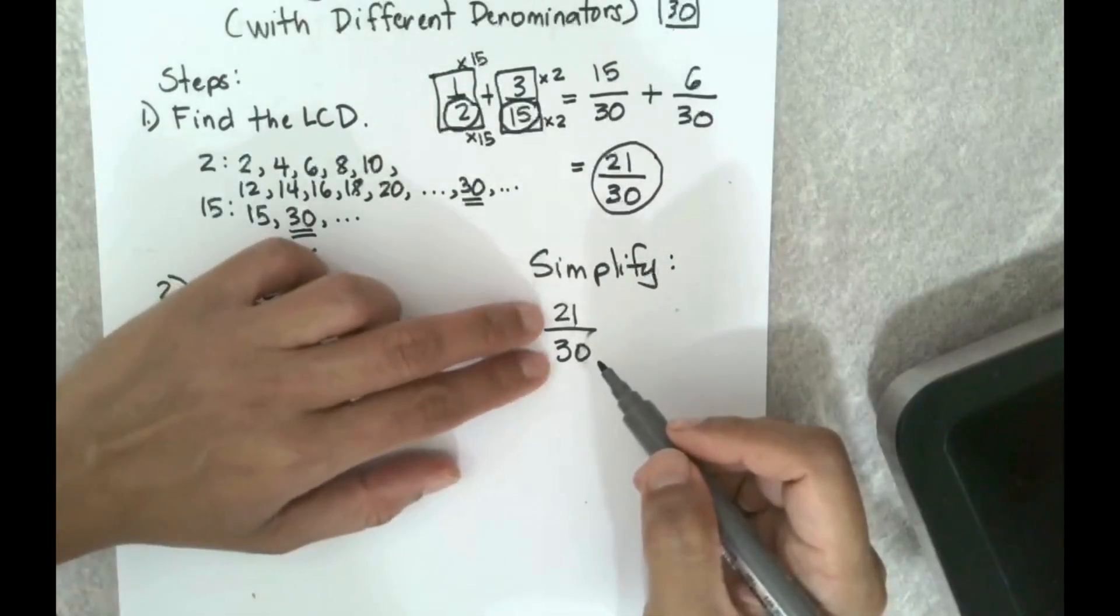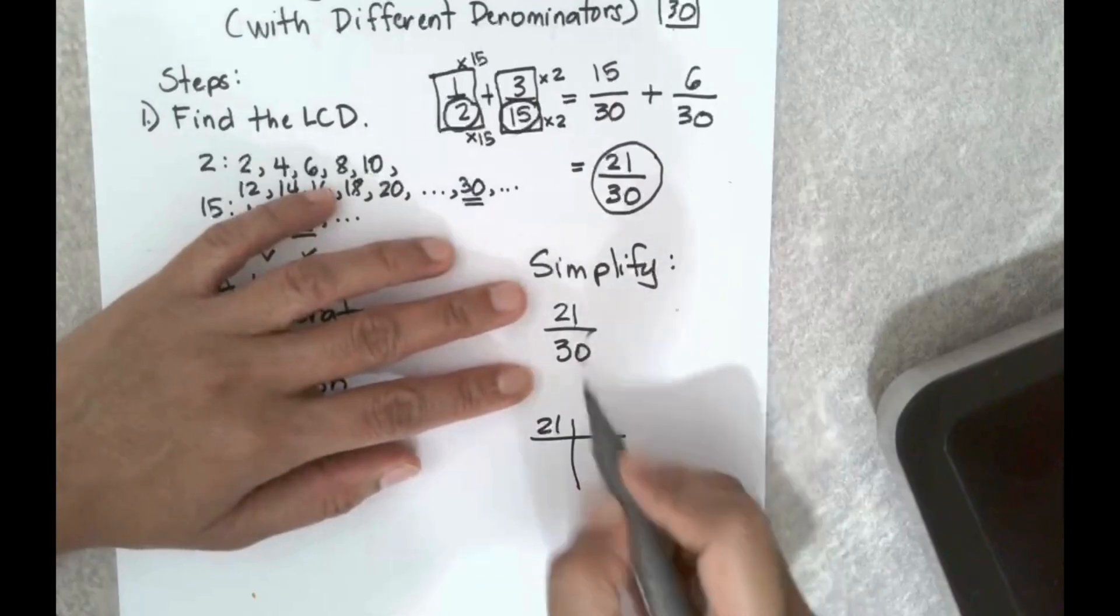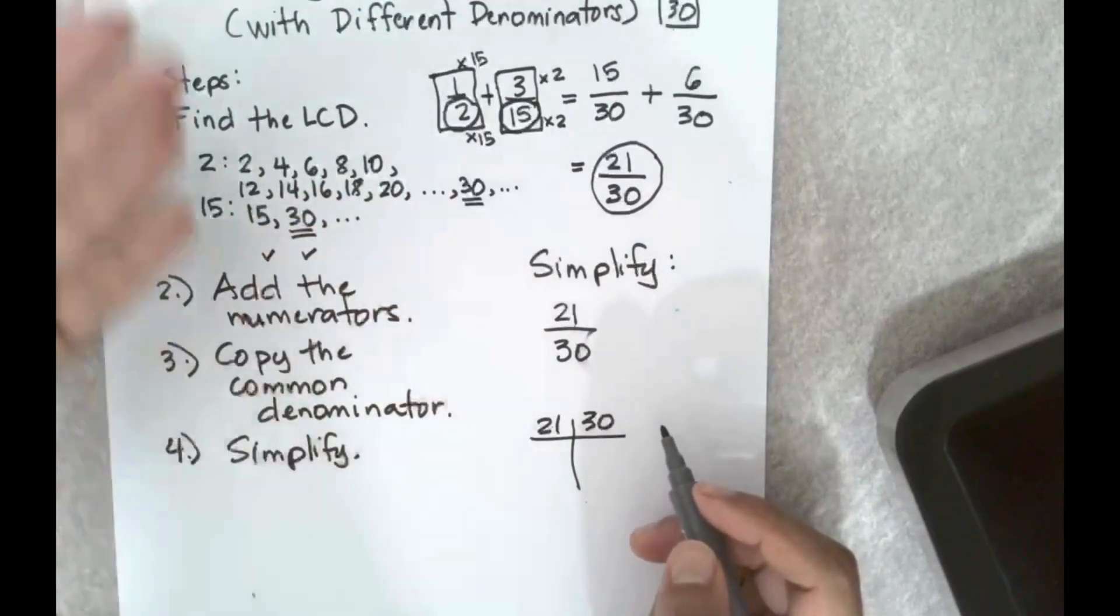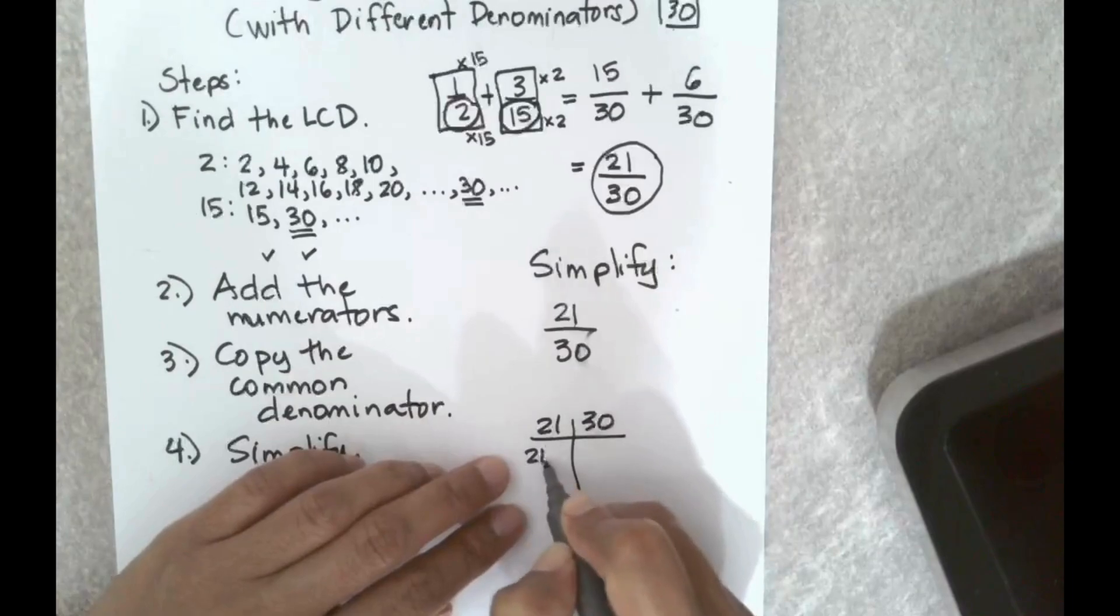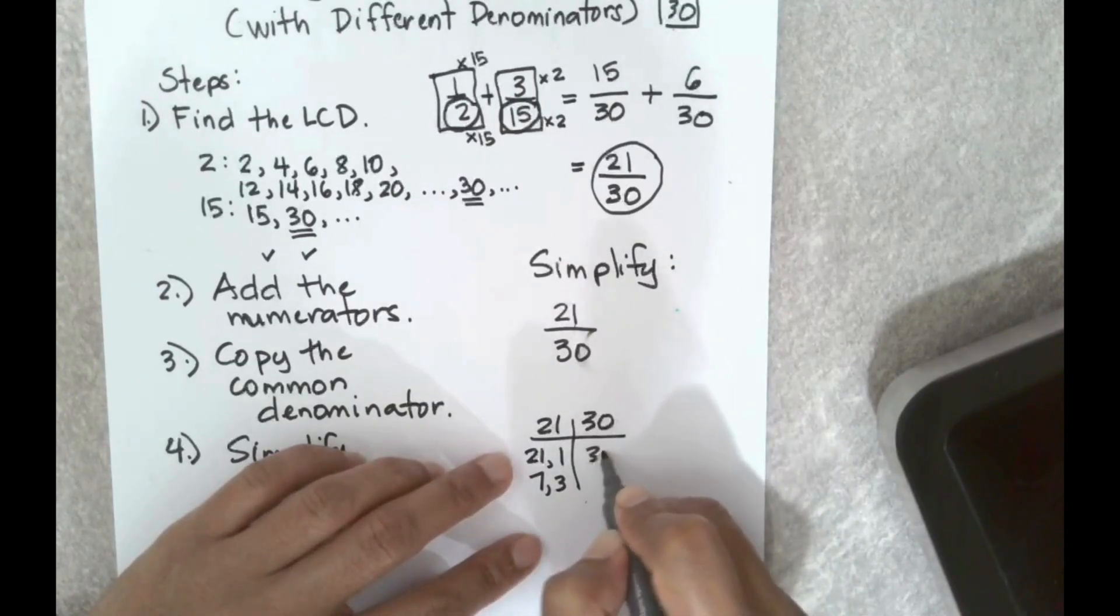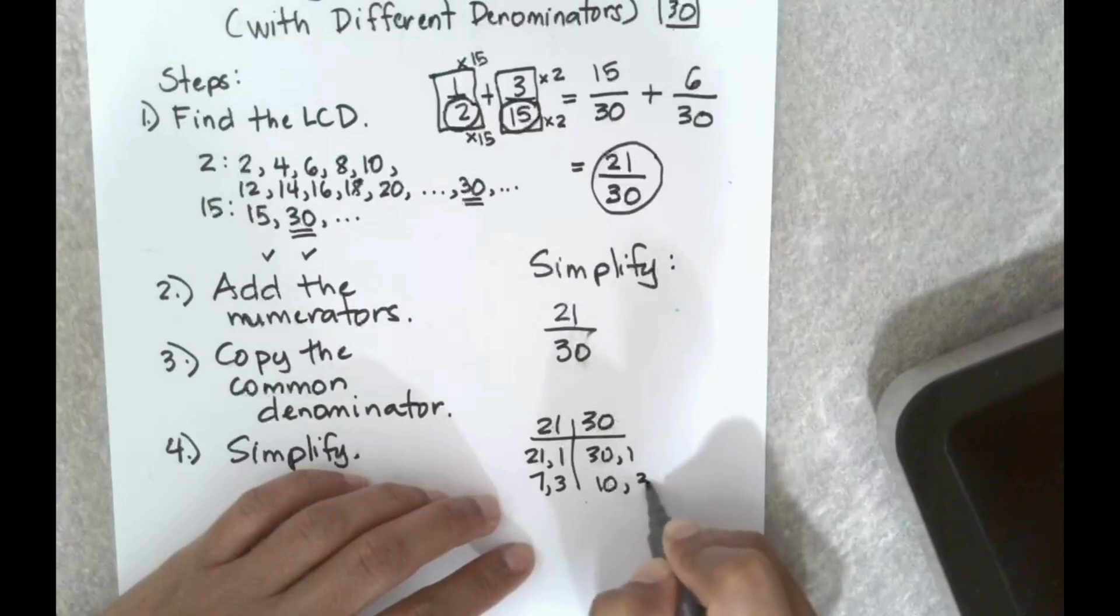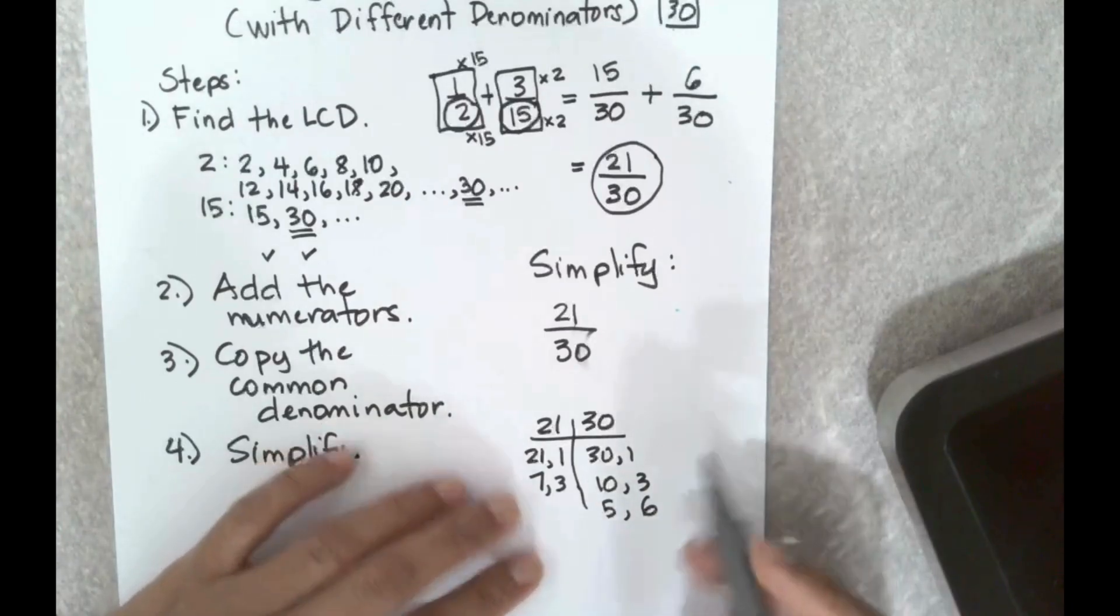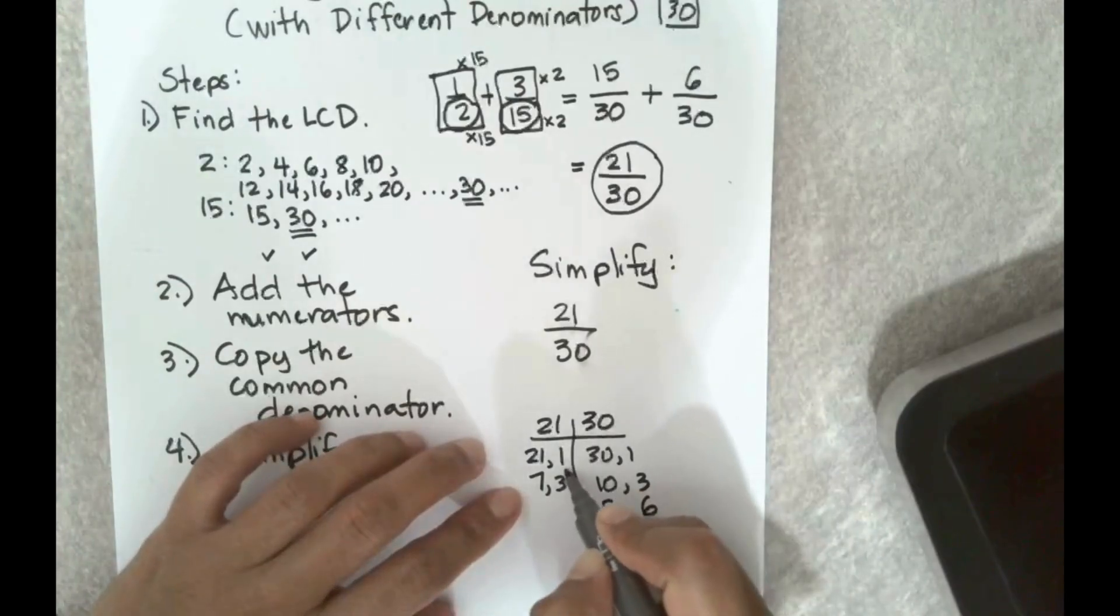If I think about 21 and I think about 30, I can think about, well what numbers can I multiply to get 21? I have 21 and 1, 7 and 3. And then for 30 I have 30 and 1, 10 and 3, I can have 5 and 6. But among all of these factors I see that 3 is common to both of them.